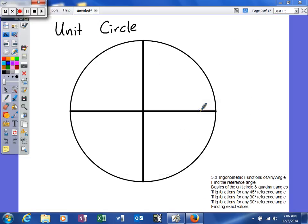Alright, so we are halfway through our unit circle. We've already found our quadrant angles, and we've already found a 45 degree reference angle.